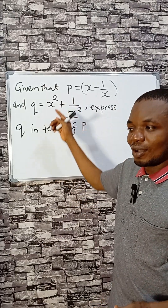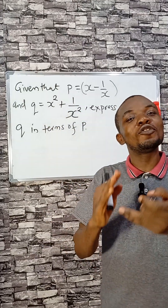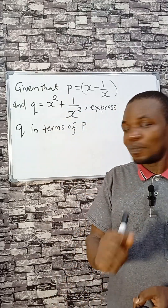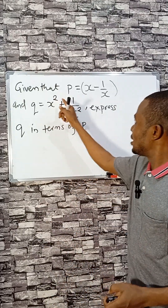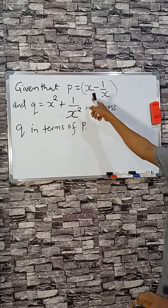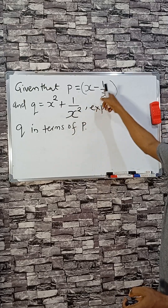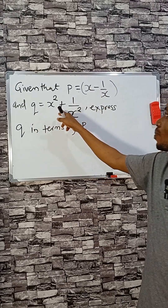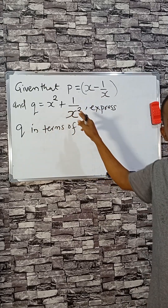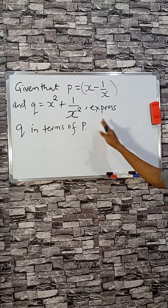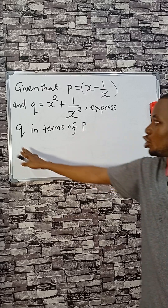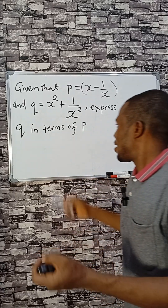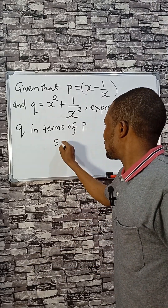This is a logical question that only very few people can solve. Given that p equals x minus one over x, and q equals x squared plus one over x squared, express q in terms of p. That is the challenge.